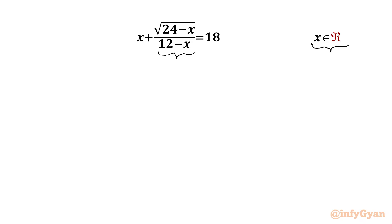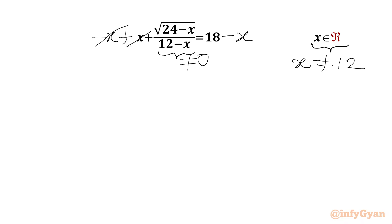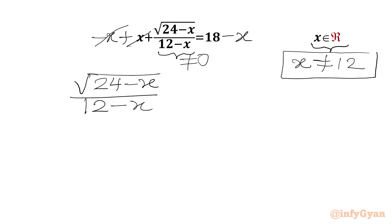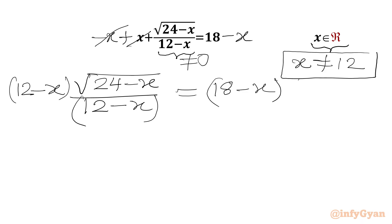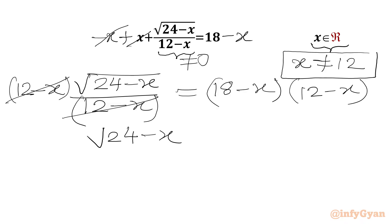Let's get started by writing that the denominator 12 minus x cannot be 0, so our answer cannot be equal to 12. Now I will subtract x from both the sides — minus x from both sides — so the plus x and minus x on the LHS cancel. Now since x cannot equal 12, I can multiply our equation — which is square root of (24 minus x) over (12 minus x) equals 18 minus x — by (12 minus x) on both sides, so the denominator cancels from the LHS. We get: square root(24 minus x) = (18 minus x)(12 minus x).